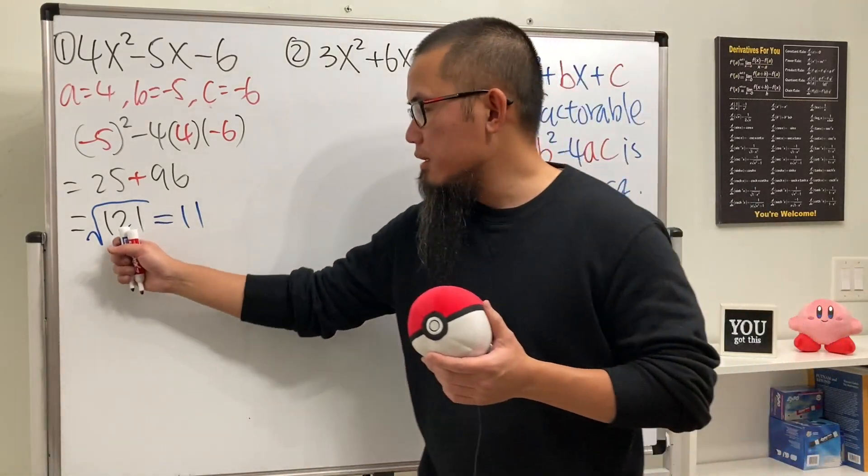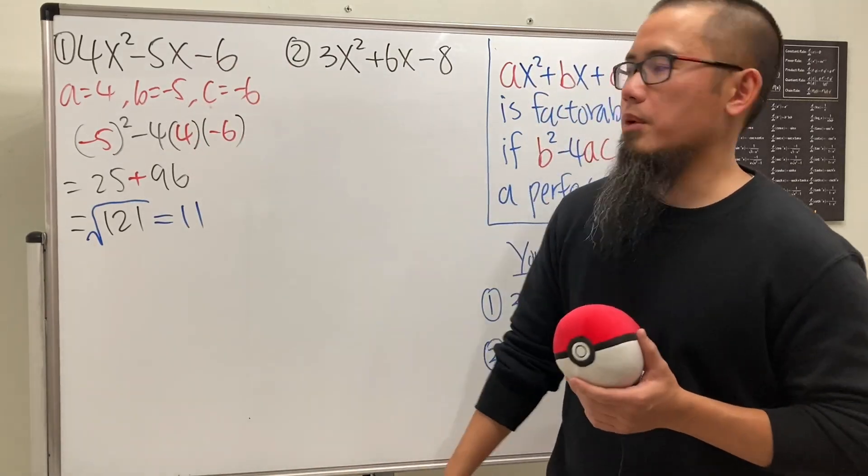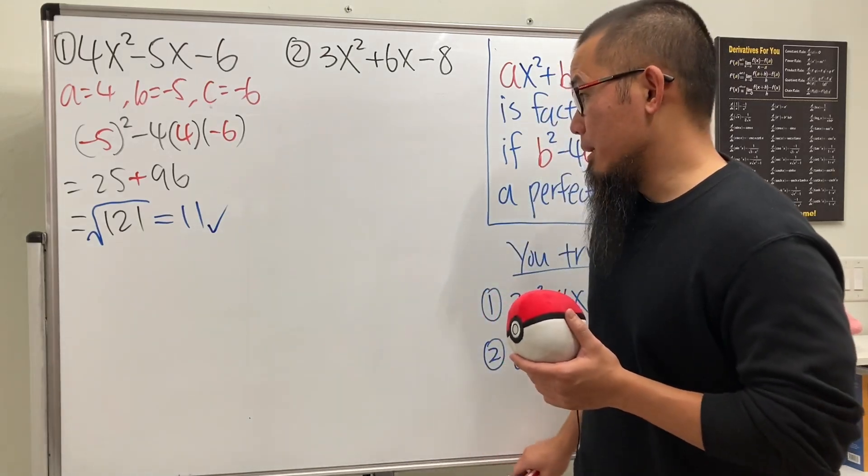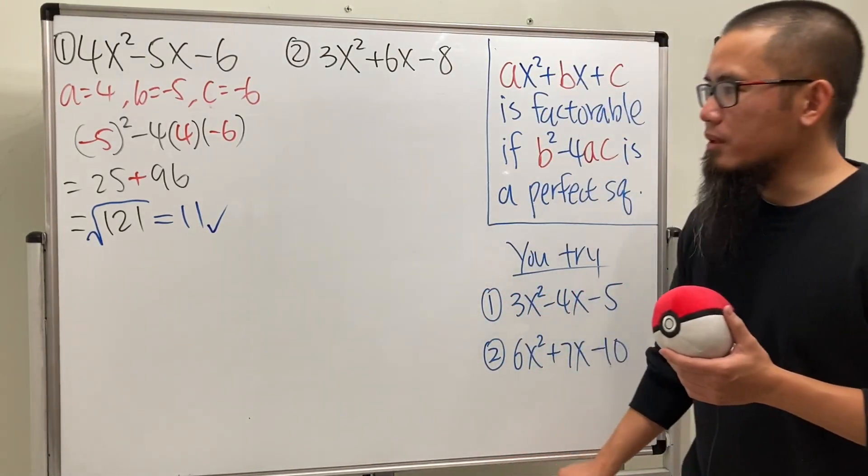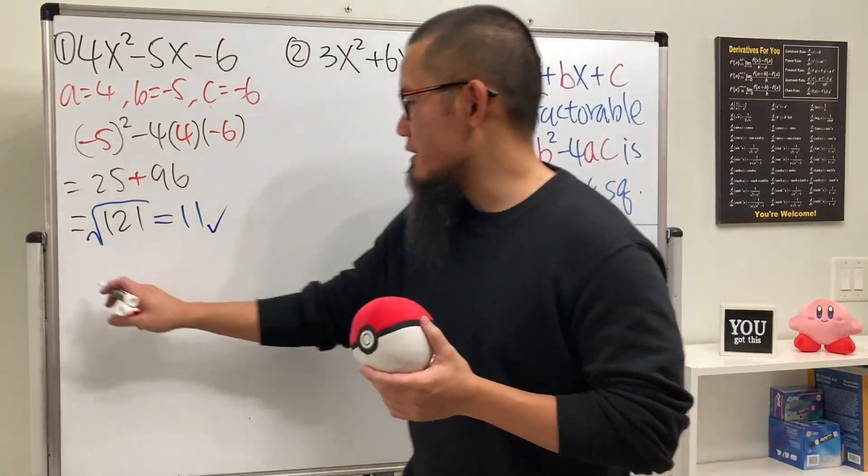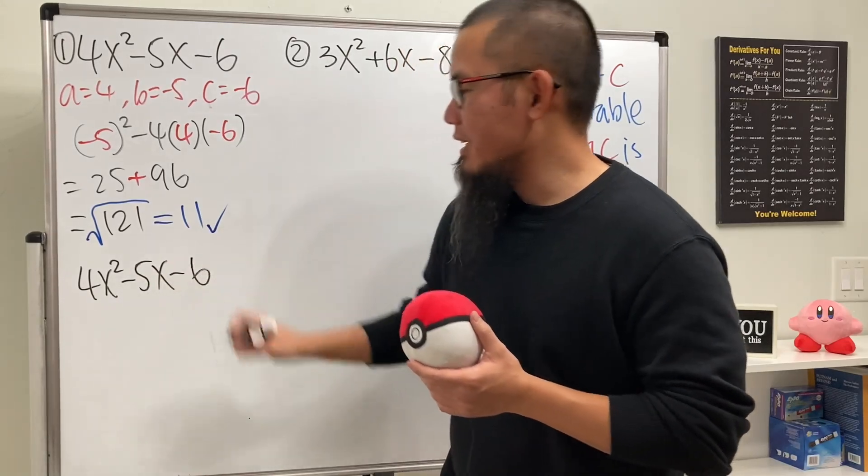So this is indeed a perfect square. So that means this right here is factorable. So this right here, let me just put on a check mark, a blue check mark, which is really cool nowadays. If it's factorable, we should factor it. So let me show you guys how to factor that. 4x² - 5x - 6.